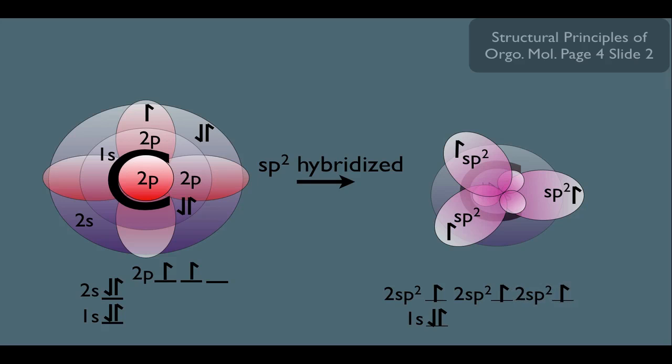Now remember, the electrons in these orbitals want to be as far apart from each other as possible. And this one's not hard to figure out. Think about it. Three orbitals that need to be far apart as possible basically means that they would be 120 degrees apart.